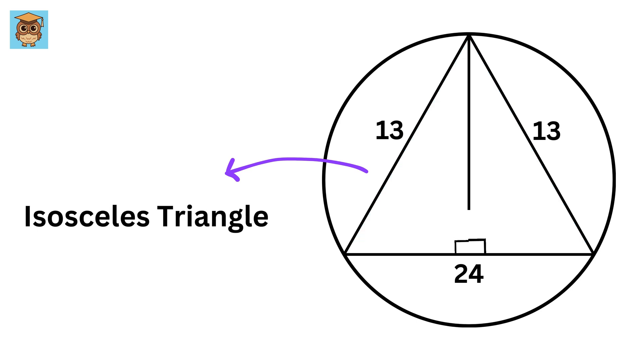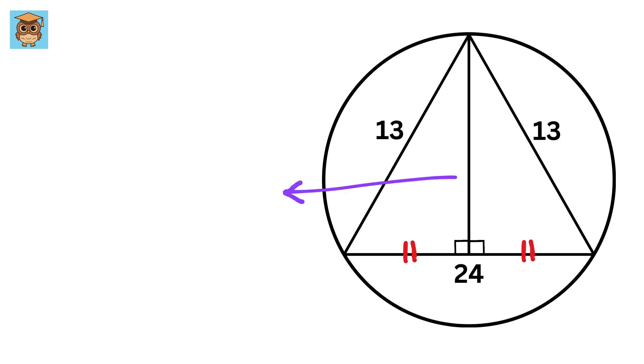If we drop a perpendicular like this, due to symmetry both these sides will also be equal and thus this line acts as a perpendicular bisector. This is of length 24, so both of them will be of length 12.